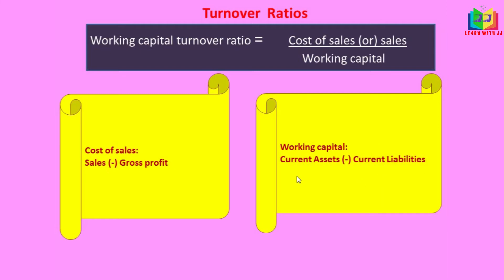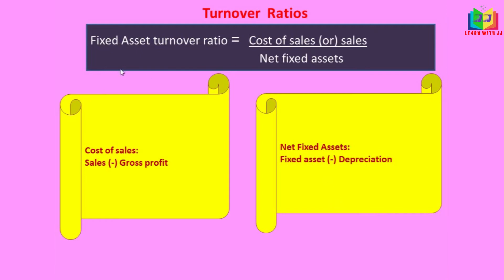The next formula is fixed asset turnover ratio. The formula is cost of sales or sales divided by net fixed assets. If cost of sales is not given, we can use sales. Net fixed assets is fixed assets — land, building, plant, machinery — minus depreciation.